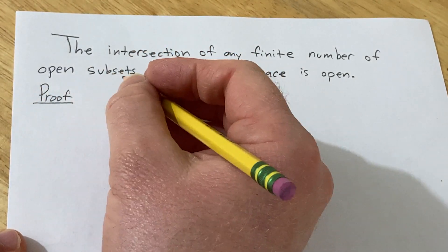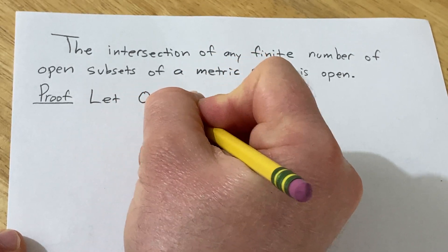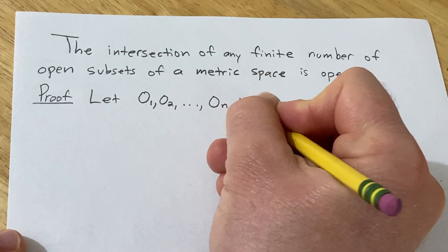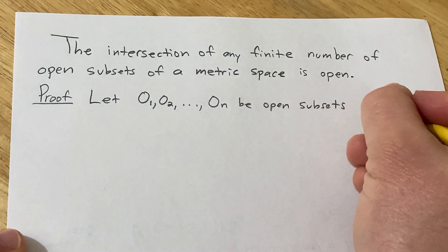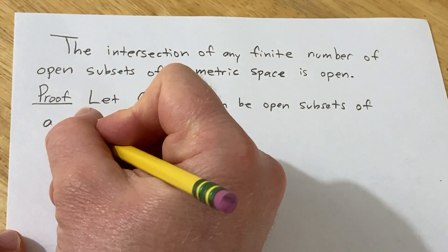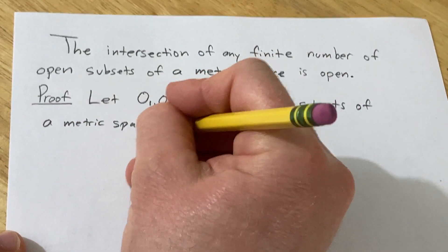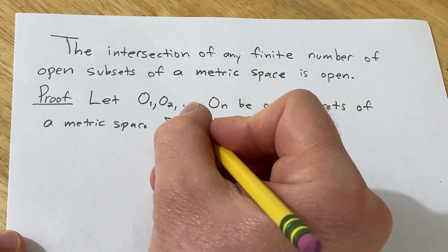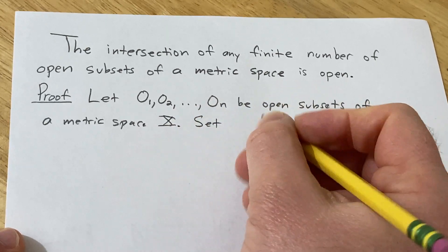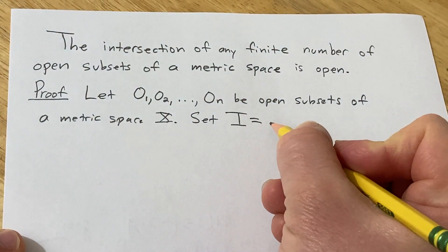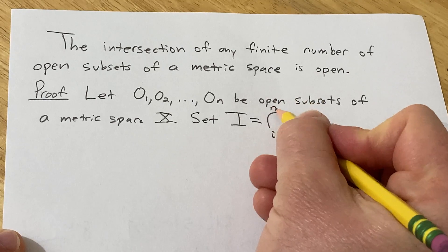Proof: Let O₁, O₂, ..., Oₙ be open subsets of a metric space X. Now we need to look at the intersection of these sets. So I'm going to set I equal to the intersection of all of these sets, where i will run from 1 to n.